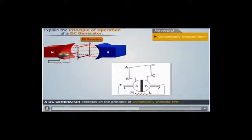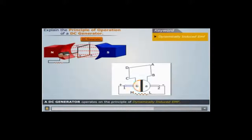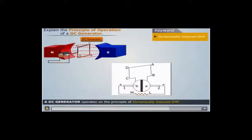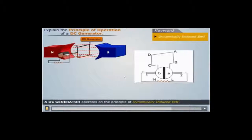You'll see that the current flows in the direct version — there's a full direct transfer of electricity. When this swaps, even though it's swapped, this is still connected to the positive end and this is still connected to the negative end of the resistor or voltmeter. So your current is going to flow in the same direction.